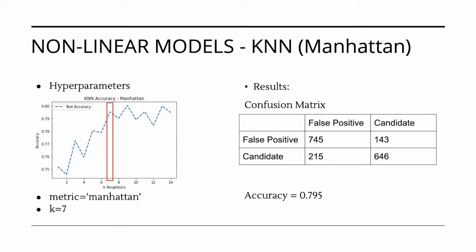For our final k nearest neighbors model, we evaluated a model using Manhattan distance. We once again need to find the optimal k value for this model. K values between 1 and 15 were once again evaluated in order to determine the best k value. The best k value was determined to be 7 using the elbow method. Our test accuracy with our k nearest neighbors model using Manhattan distance was 0.795. Of our k nearest neighbors models, the model using Manhattan distance is the best performing in terms of accuracy.